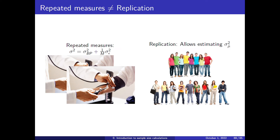On nomenclature: repeated measures means measuring the same subject multiple times. Replication is when you repeat your experiment with a different group, and it allows you to estimate sigma squared of the mean.